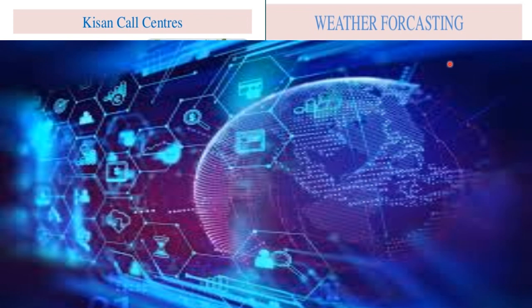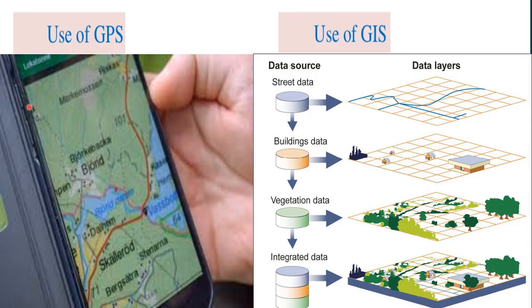Weather forecasting: weather forecasting helps find out weather, climate, and water stresses in agriculture. The use of the Global Positioning System provides benefits in geofencing.